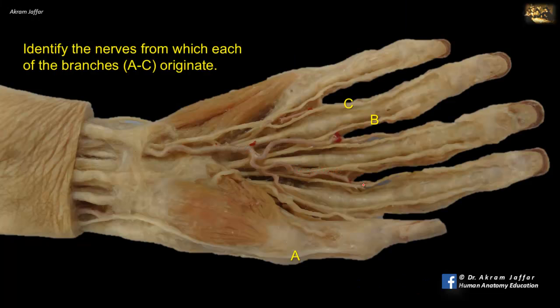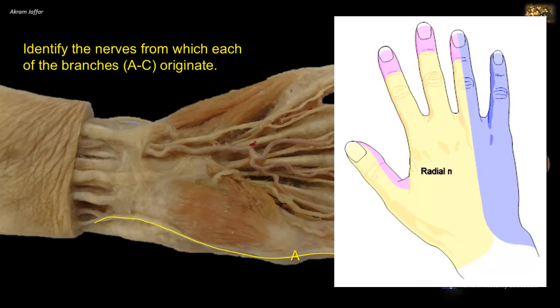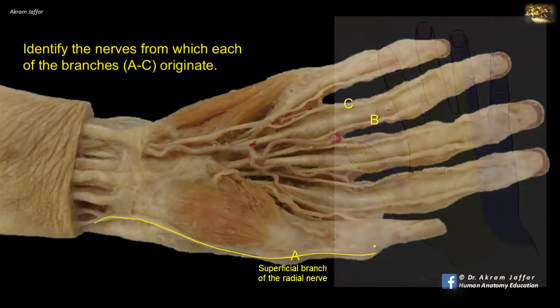Identify the nerves from which each of the branches A to C originate. This is a superficial dissection of the hand showing the cutaneous nerves. The superficial branch of the radial nerve can be seen at the roof of the anatomical snuffbox, and it supplies the lateral side of the dorsum of the hand and the lateral three and a half digits proximal to the nail beds. So A is derived from the superficial branch of the radial nerve.